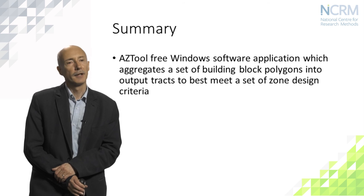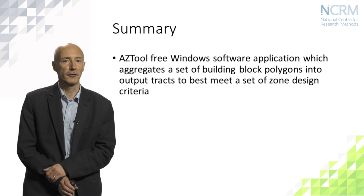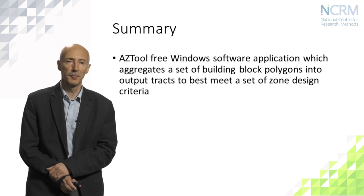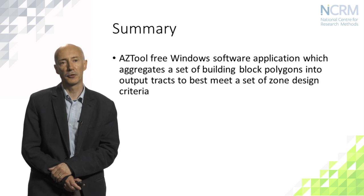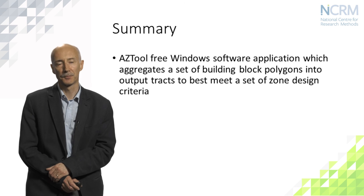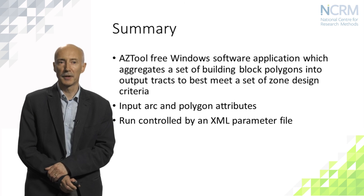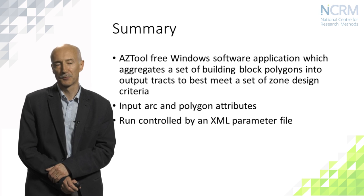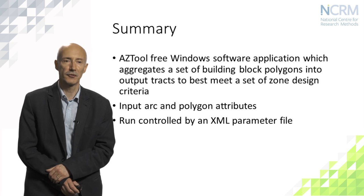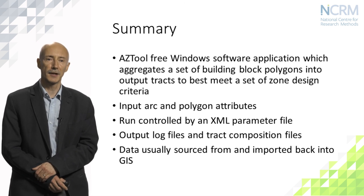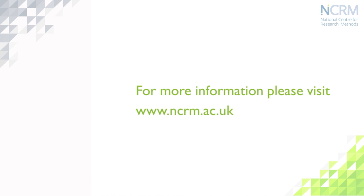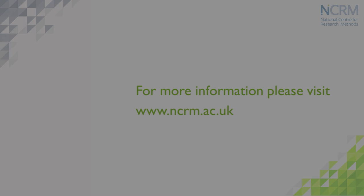In summary, AZTool is a freely downloadable Windows software application which can be used to implement automated zone design. It aggregates building block polygons into output tracks to best meet a set of zone design criteria. It's supplied with arc and polygon attributes and controlled by an XML parameter file — usually data from a geographic information system. The output log files and tracked composition files are the principal outputs, and we would usually re-merge them into GIS software in order to map the results.